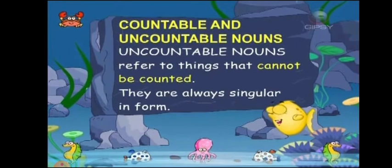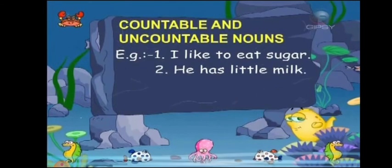Uncountable nouns refer to things that cannot be counted. They are always singular in form. For example: 'I like to eat sugar' and 'He has little milk.' In these sentences, sugar and milk are uncountable nouns. We cannot count sugar and milk, can we children? So these are uncountable nouns.